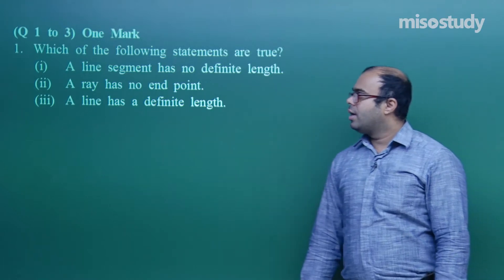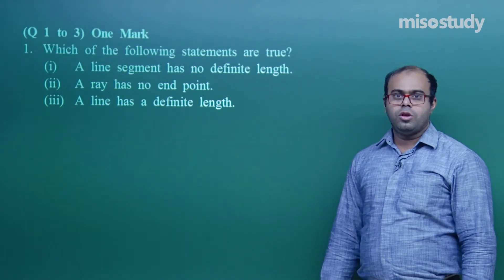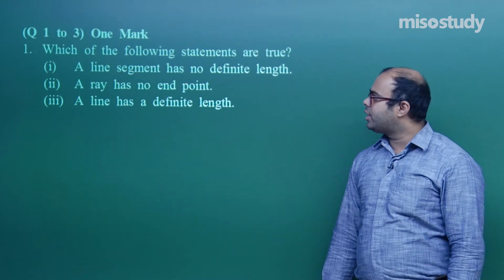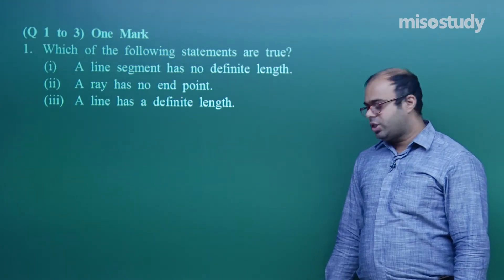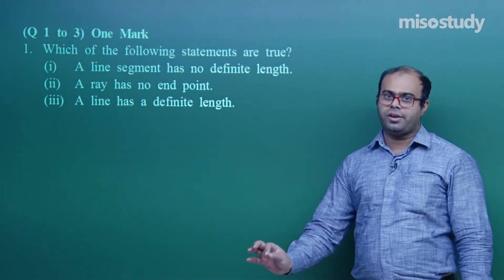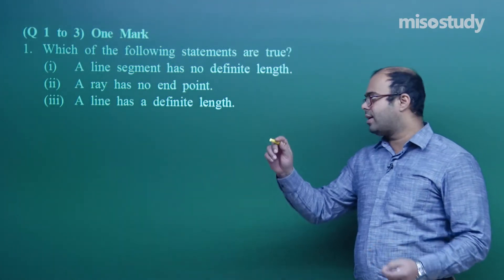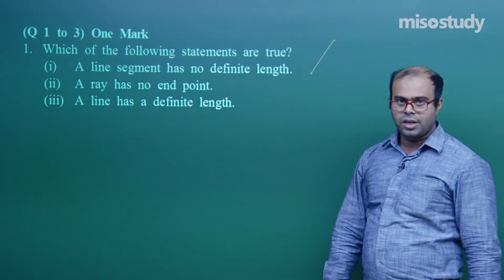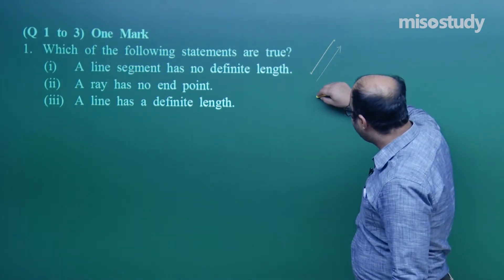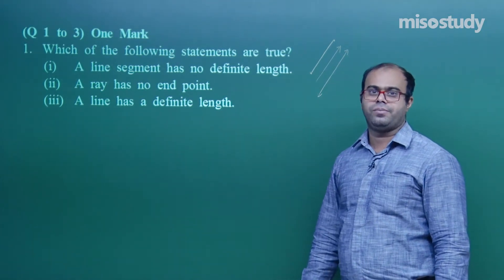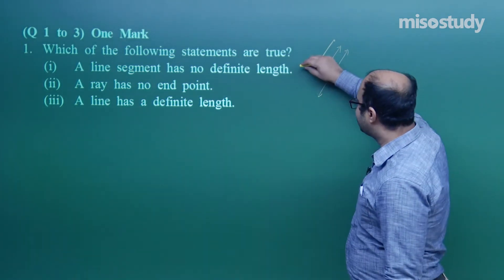The first question is one mark. It asks which of the following statements are true. First statement: a line segment has no definite length. This is not true because a line segment has a definite length. A line does not have a definite length, and a ray does not have a definite length, but a line segment does because it has a starting point and an end point.